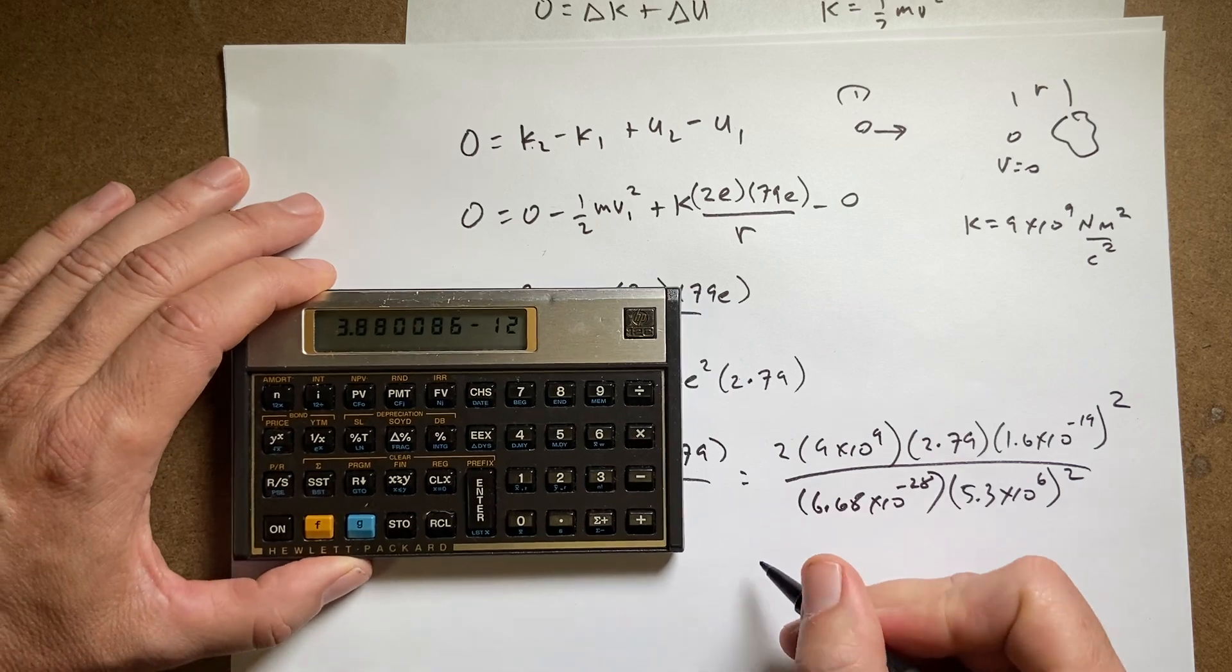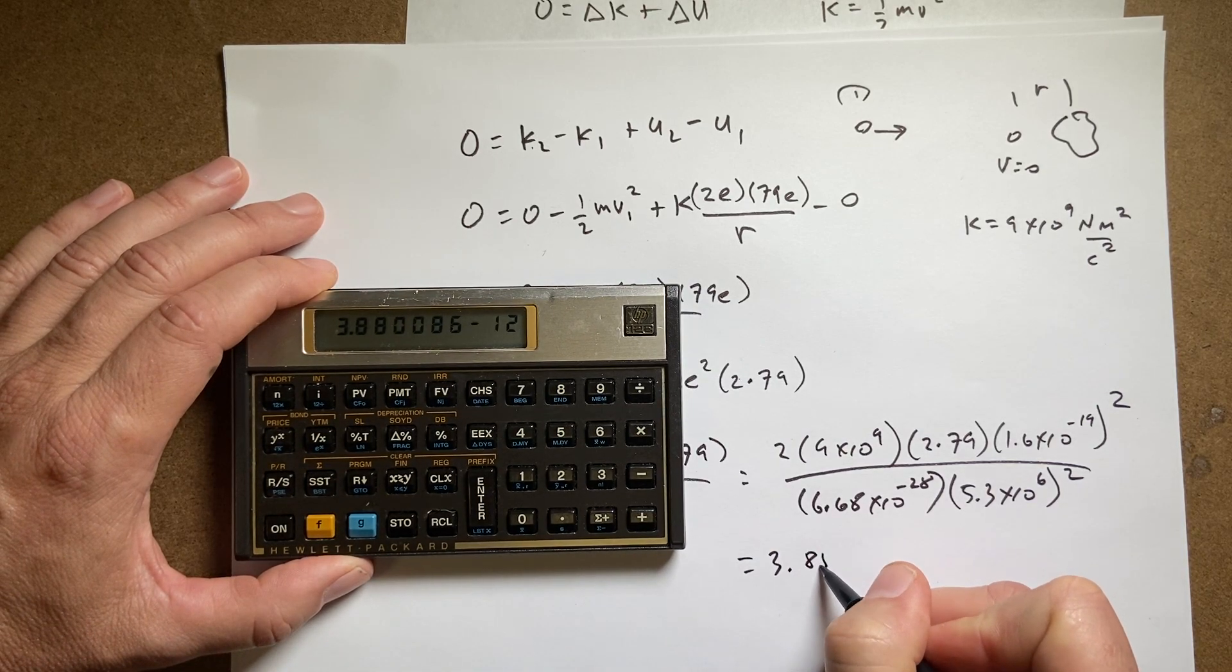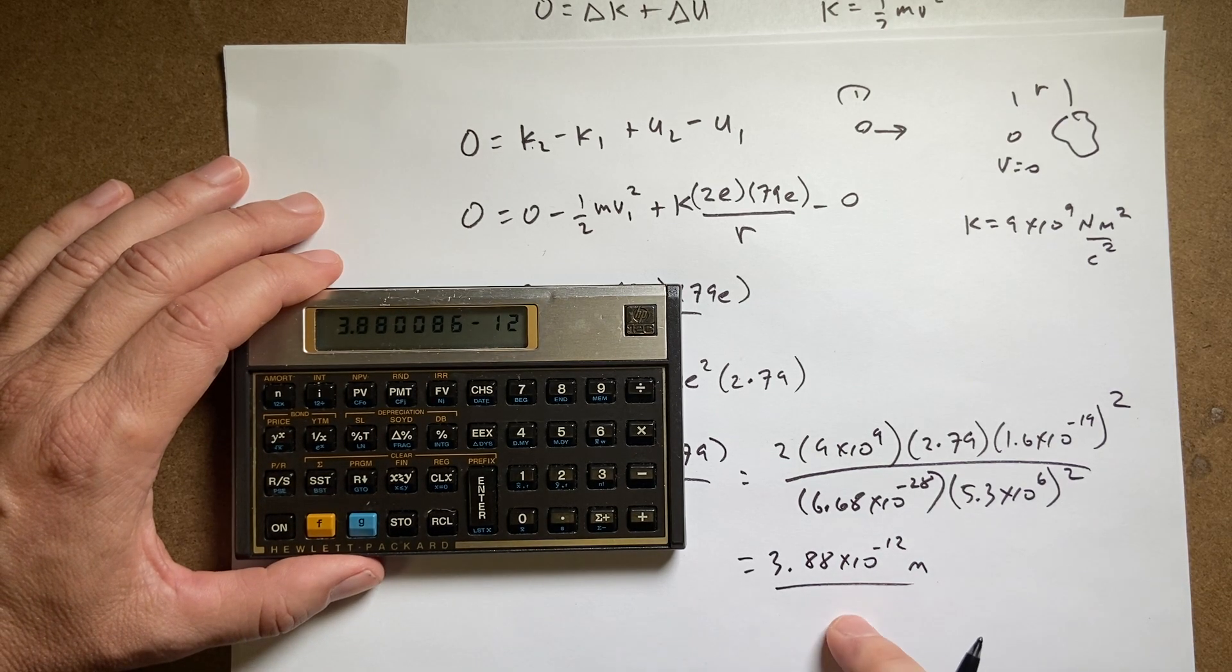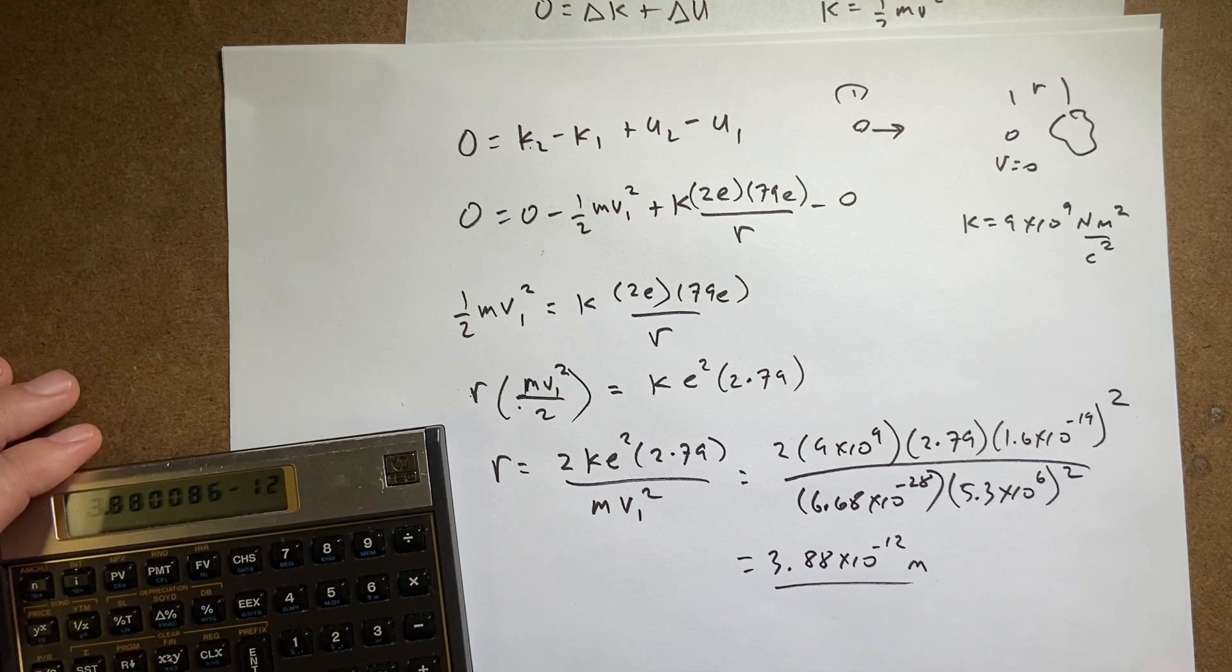Okay. 3.88 times 10 to the negative 12 meters. There is a chance I made a mistake on that number. But I showed all my work so I should get full credit.